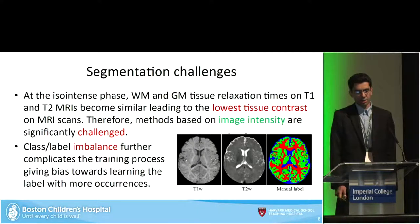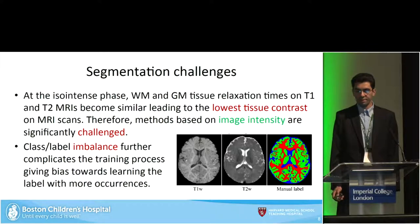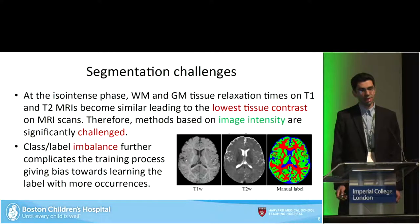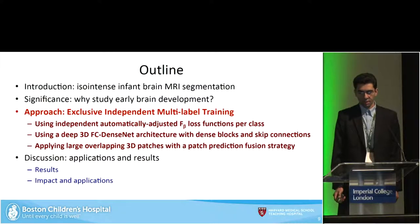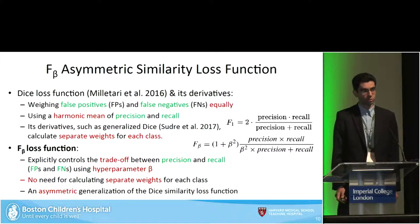On top of that, we always have the problem of data imbalance in medical image segmentation, especially when the tissues show close intensity values. That brings me to the approach: the beta asymmetric similarity loss functions. In 2016, for the famous VNet architecture, which is a 3D U-Net, the DICE loss function was proposed to take care of the data imbalance issue.